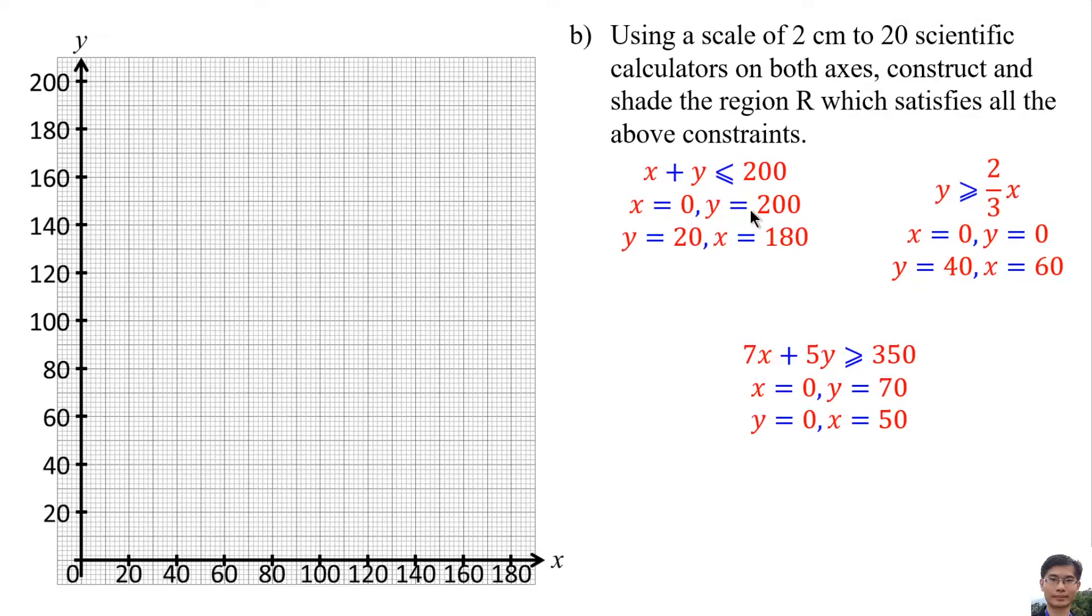Number of scientific calculator of Type B means x0, y200, y20, x180. Connect both points.